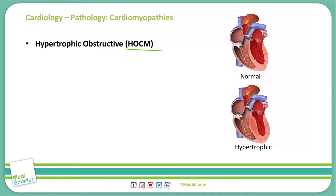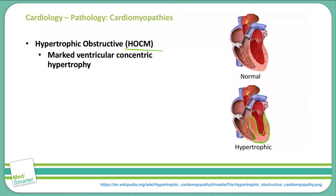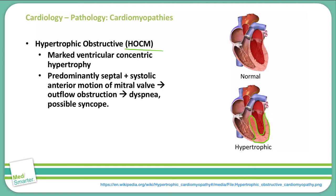As you see in this picture, our normal heart is on the top and our hypertrophic heart is on the bottom. You can see very large muscular walls and intraventricular septum of the left ventricle specifically. We're seeing a marked ventricular concentric hypertrophy — all the way around the heart where the muscle fibers are hypertrophying. What we have here is predominantly septal hypertrophy as well as systolic anterior motion of the mitral valve leaflets, and that causes an outflow obstruction.